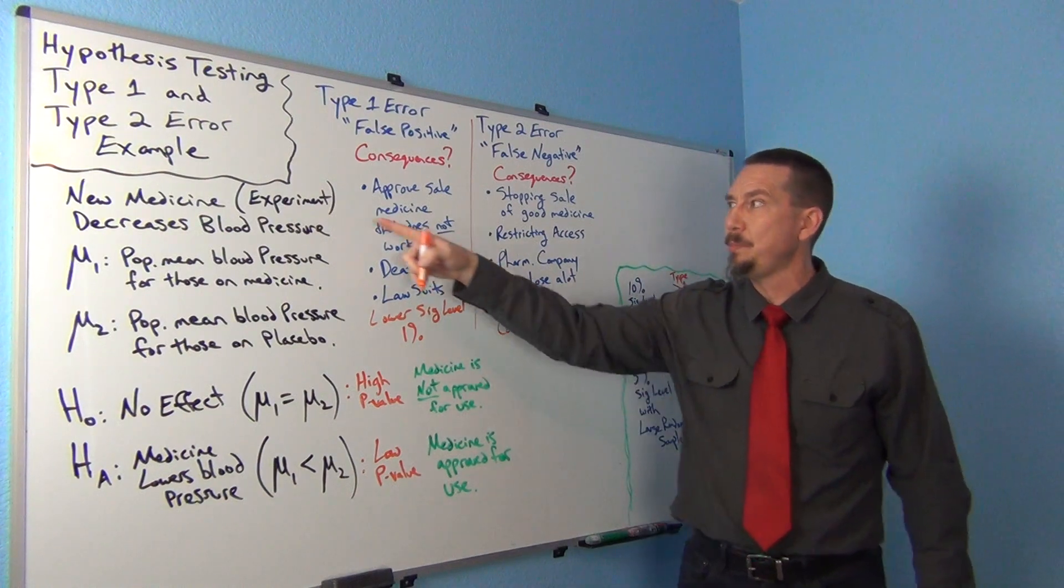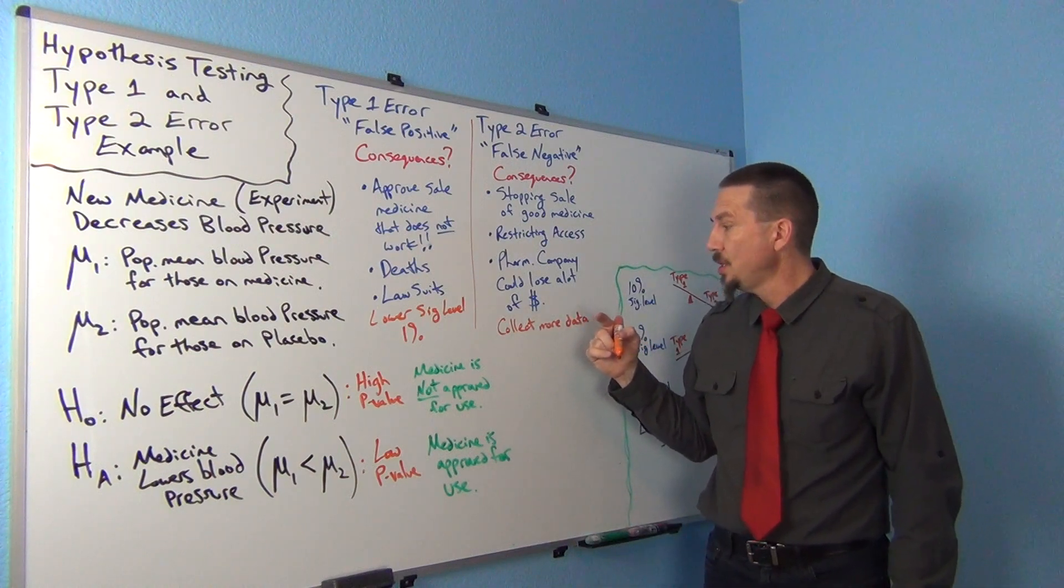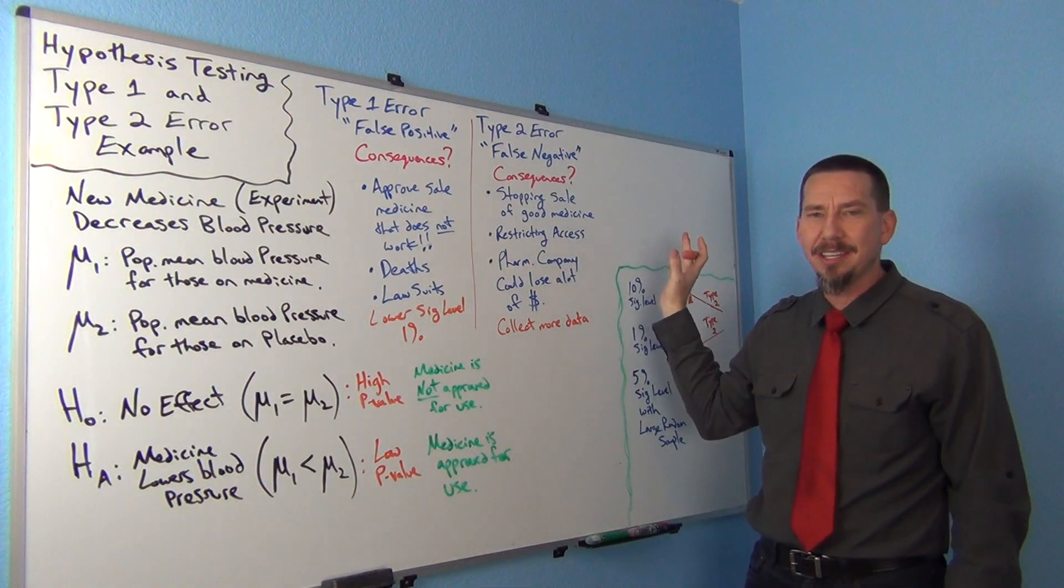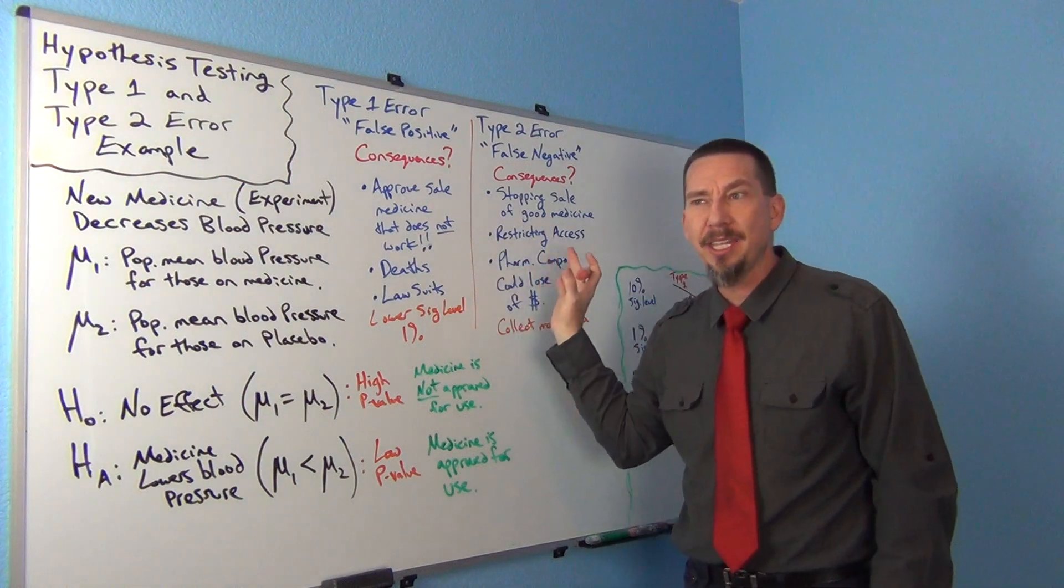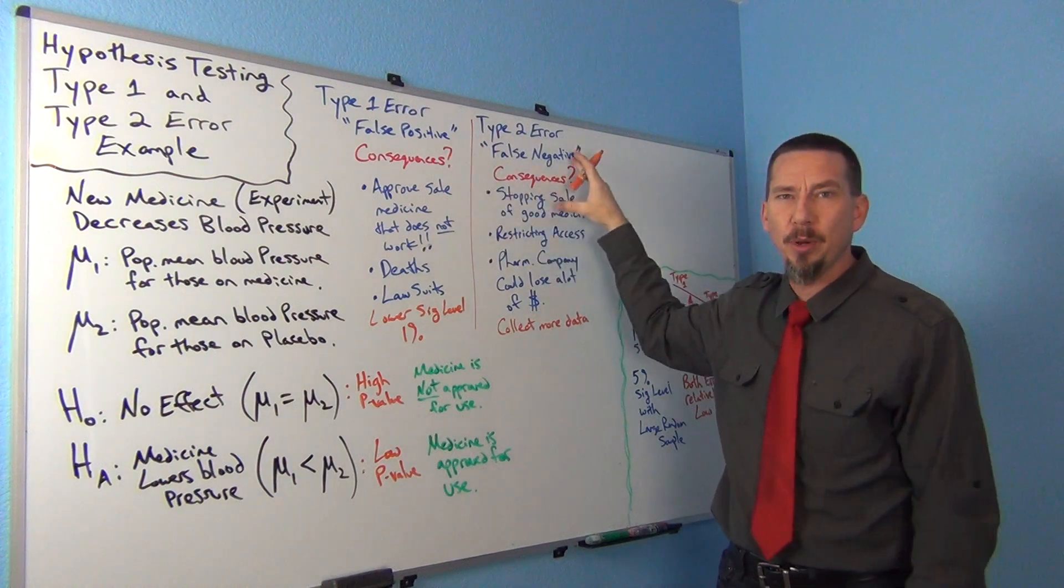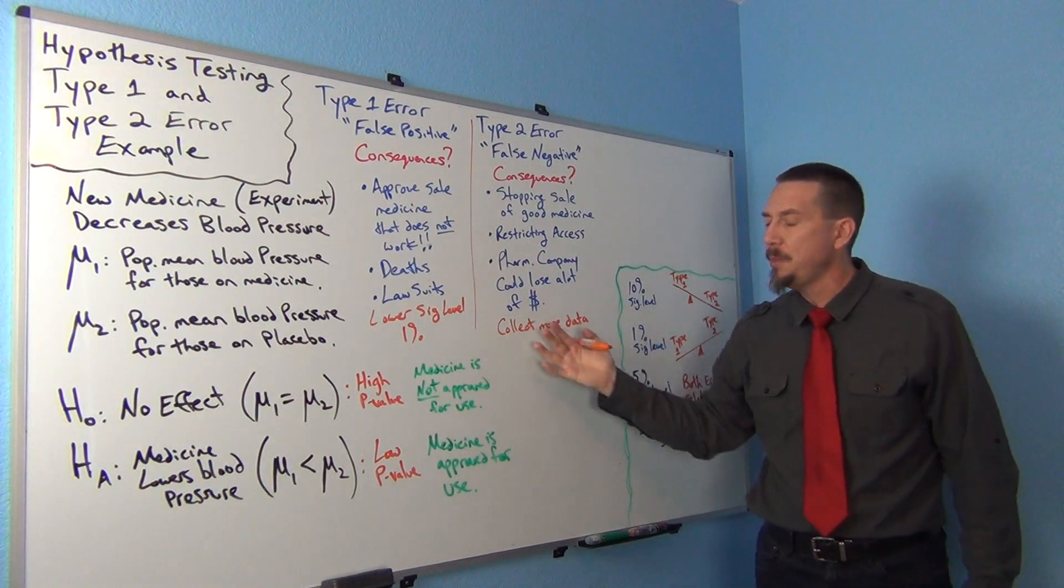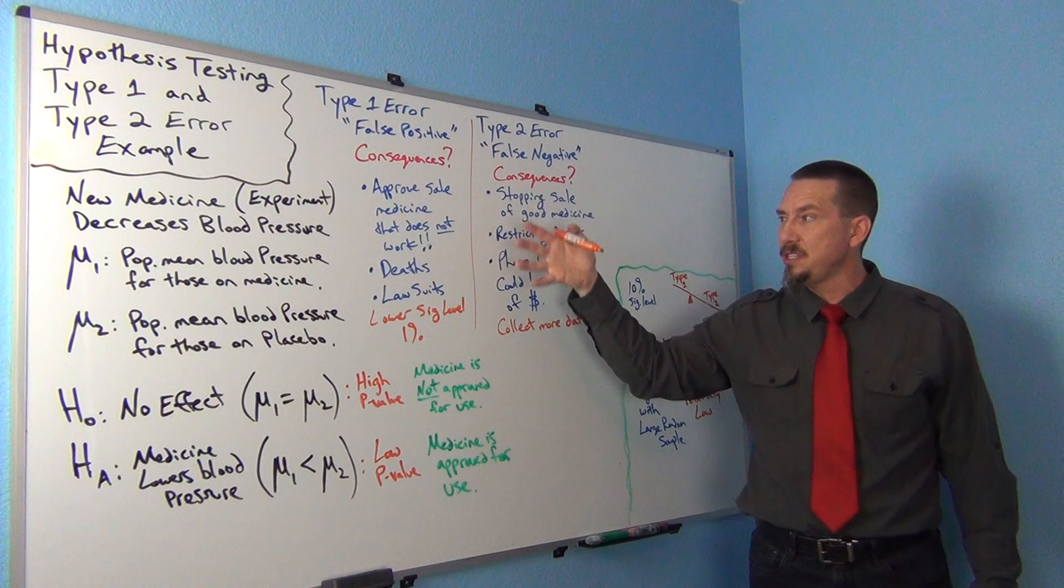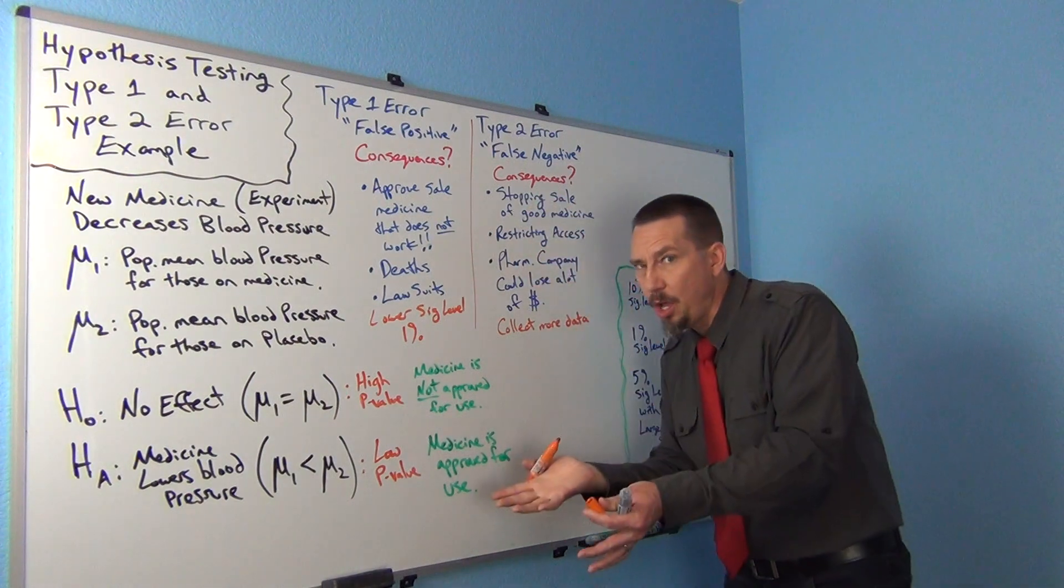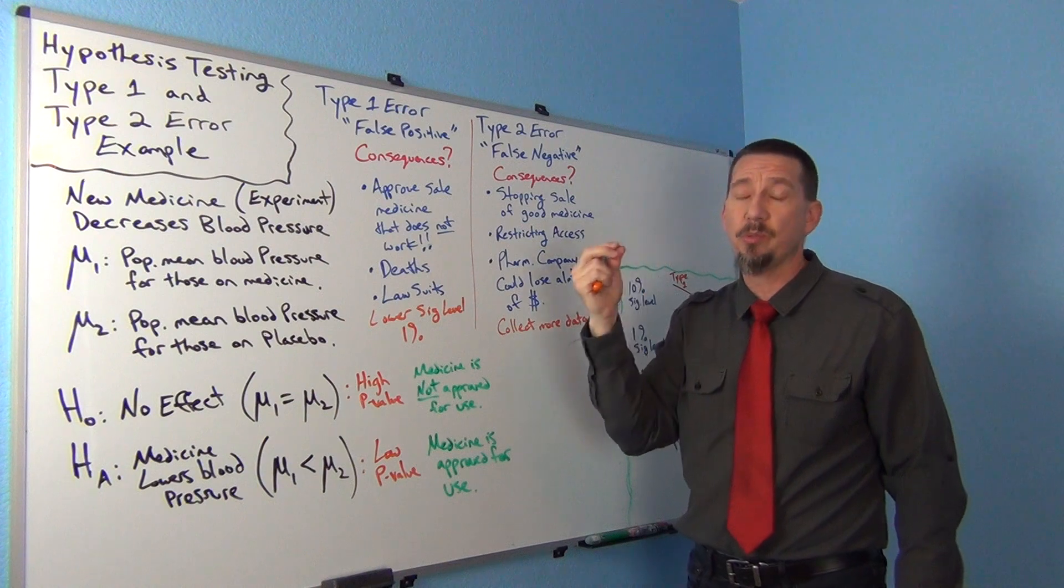Okay, so this is just giving you an idea that before a statistician ever starts to collect data and thinks about doing the hypothesis test, they have to think through: what are my consequences of Type 1 and Type 2 error? And then they can adjust where they're going to set their significance level and how much data they want to collect based on these considerations. You have to think through, what if I got this wrong? What would be the consequences?